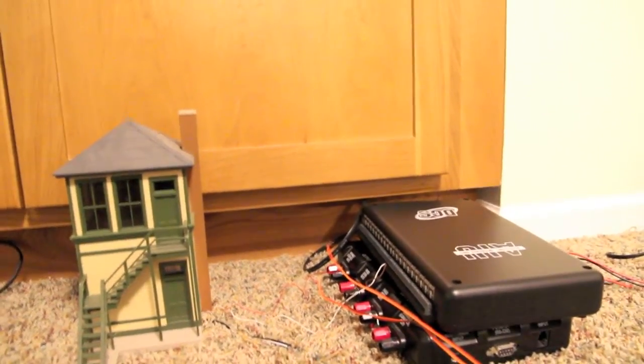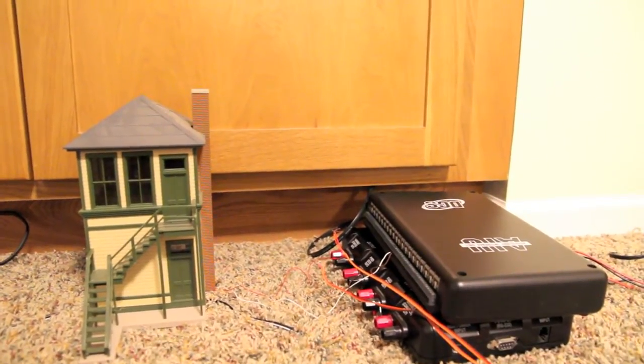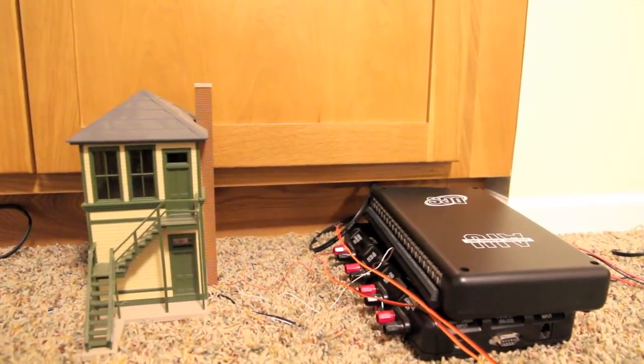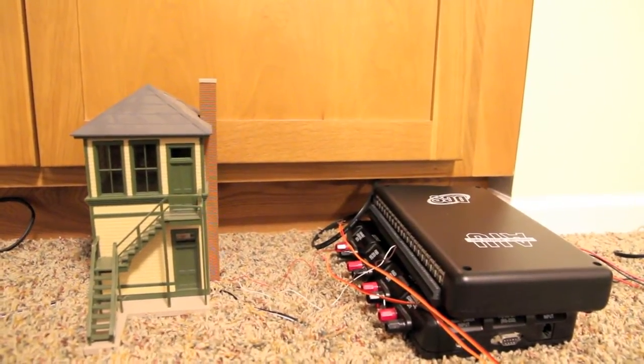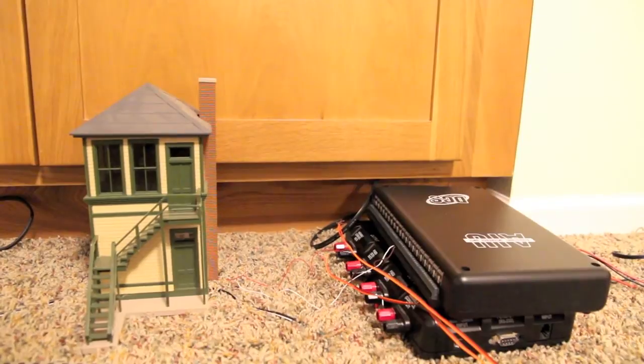So from the black terminal on the TIU, a wire goes to the terminal labeled IN on the accessory side of the AIU.